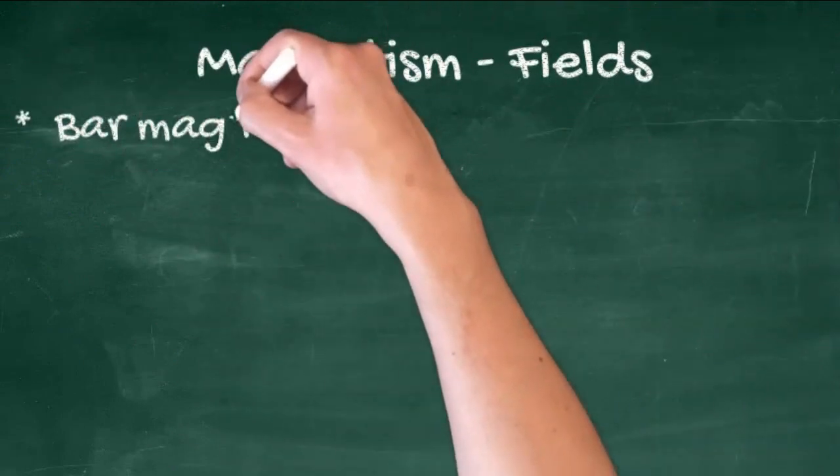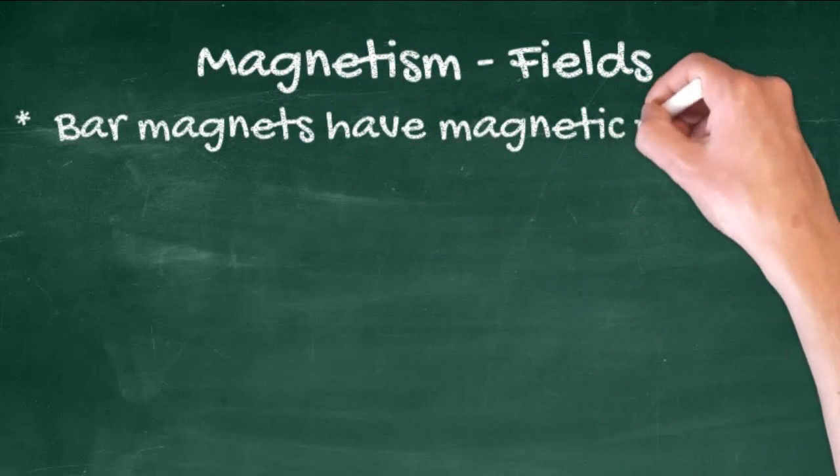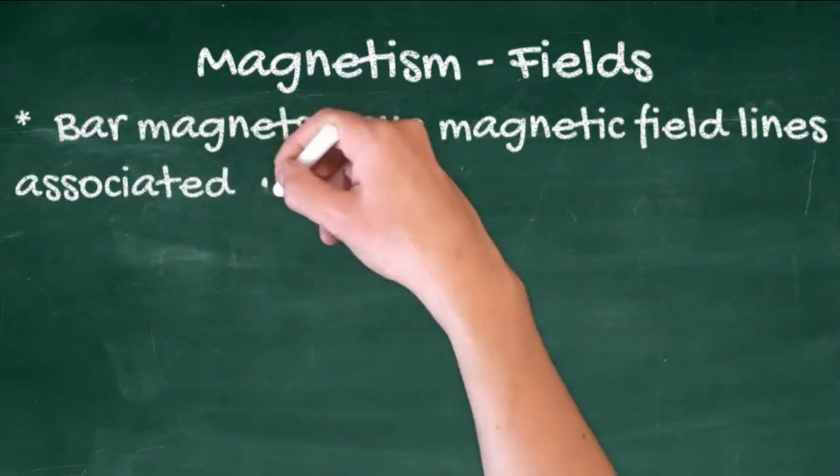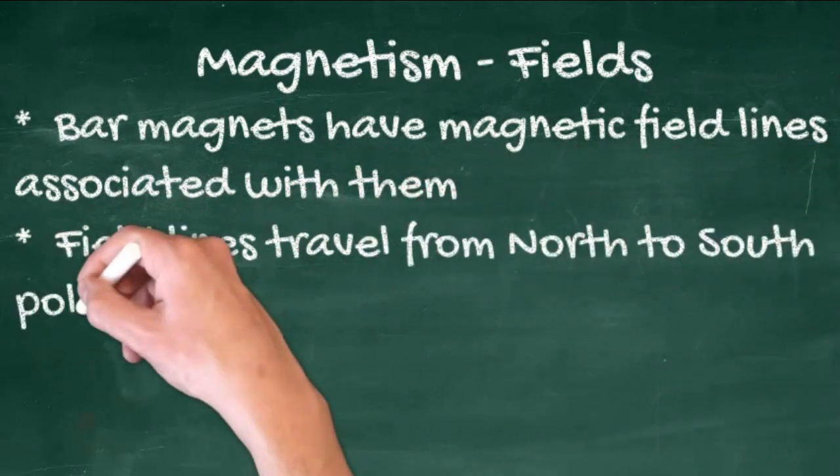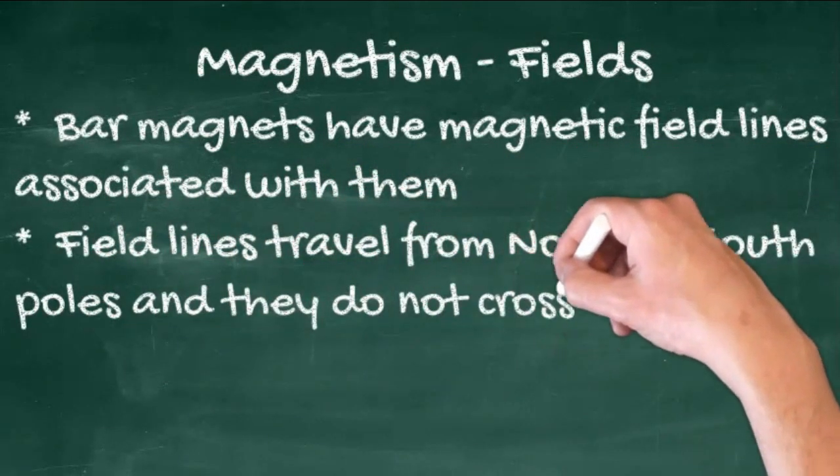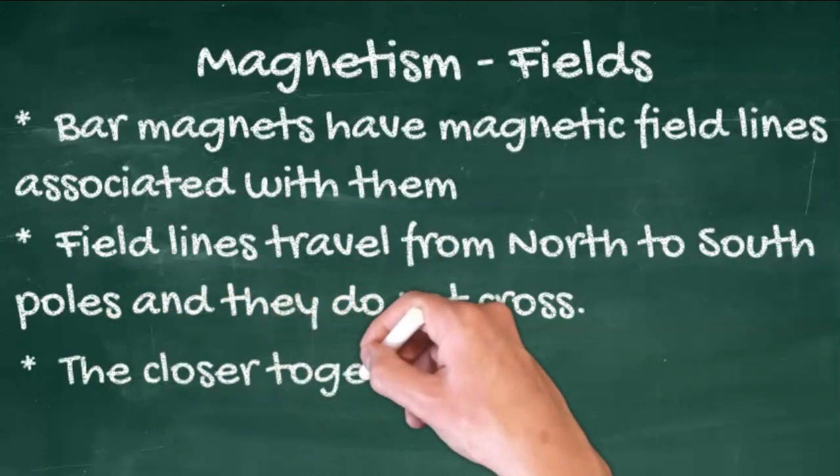I mentioned field lines. Bar magnets have magnetic field lines associated with them. Field lines travel from north to south and they do not cross. The closer together the lines are, the greater the field strength.